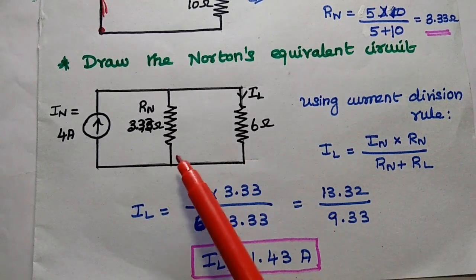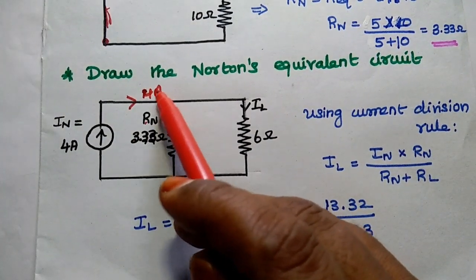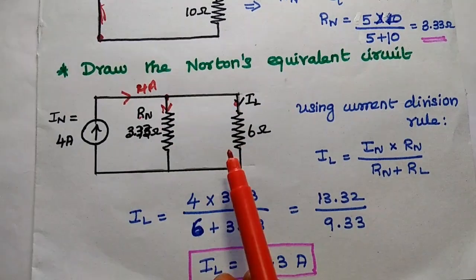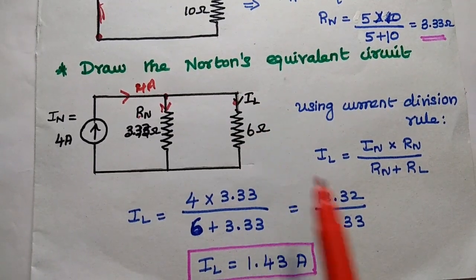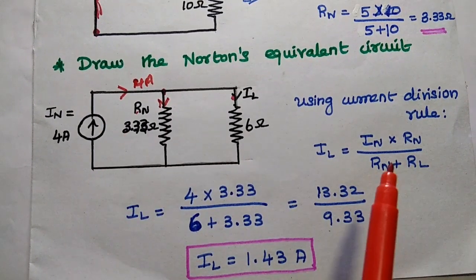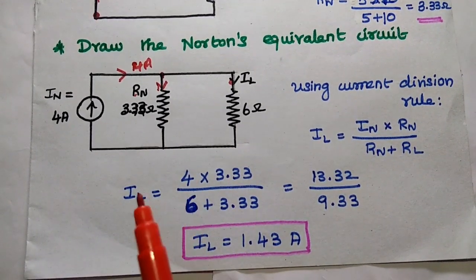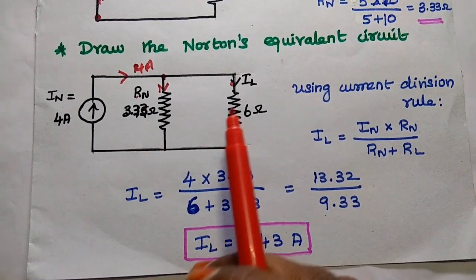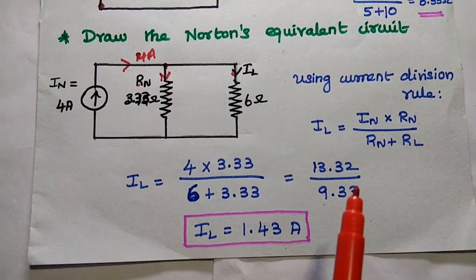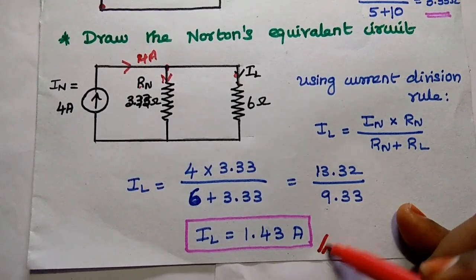We have two resistors in parallel, with 4 Ampere total current flowing and dividing between the two branches. Using the current division rule: IL equals the total current multiplied by RN divided by RN plus RL. Substituting: IL equals 4 multiplied by 3.33 divided by the sum of 3.33 and 6, giving 13.32 divided by 9.33. The final answer is 1.43 Ampere.